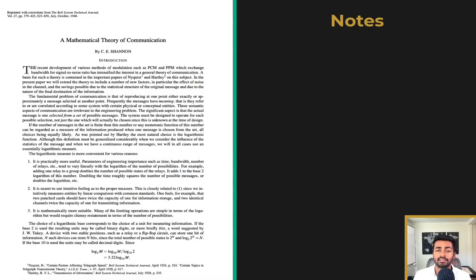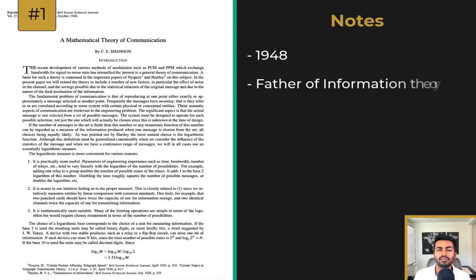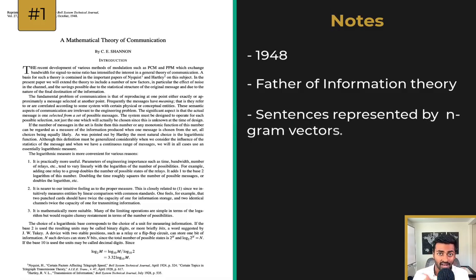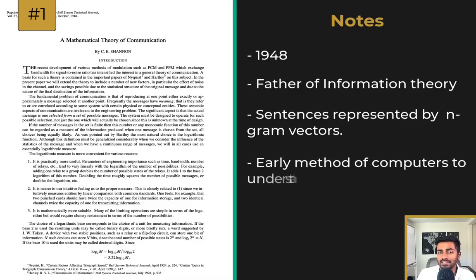We start off with the paper Mathematical Theory of Communication. This paper was written in 1948 by Claude Shannon, who is regarded as the father of information theory. Essentially, since we want to represent language with numbers, we do so by representing sentences with n-gram vectors. This is done by first breaking down the sentence into its corresponding n-grams and determining which n-grams are present in the representation. This was one of the earliest ways that computers understood sentences.